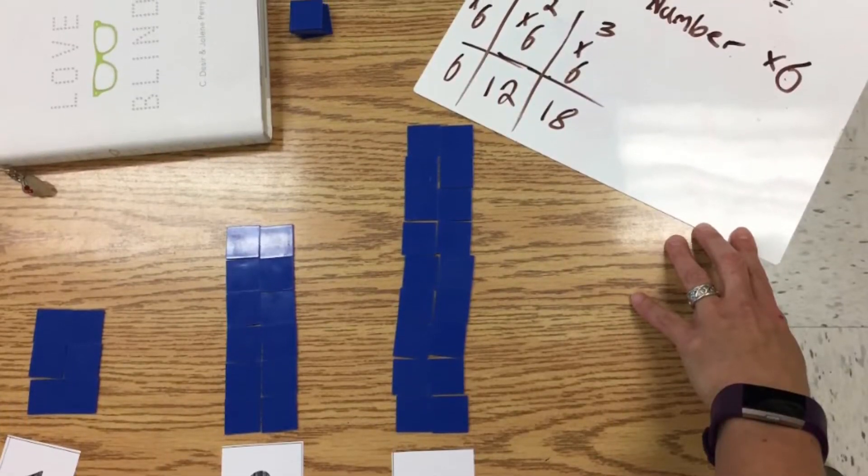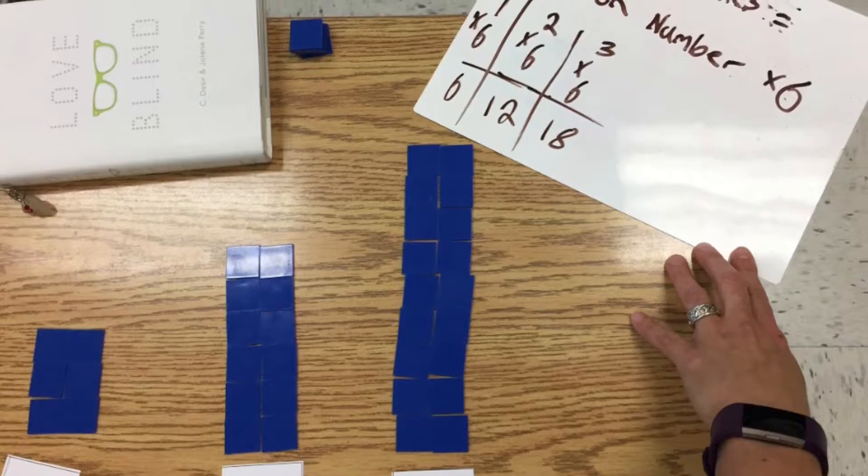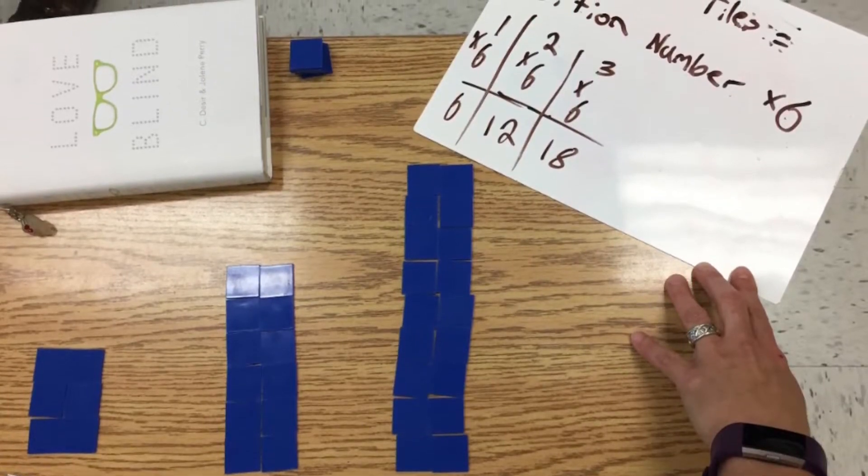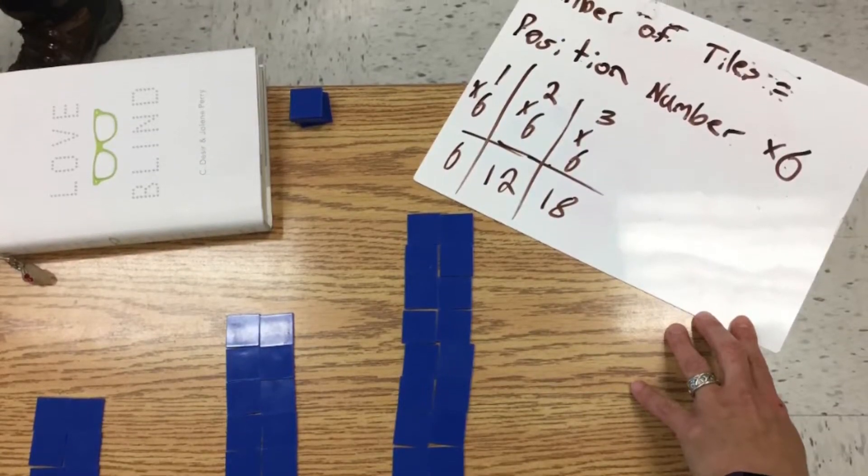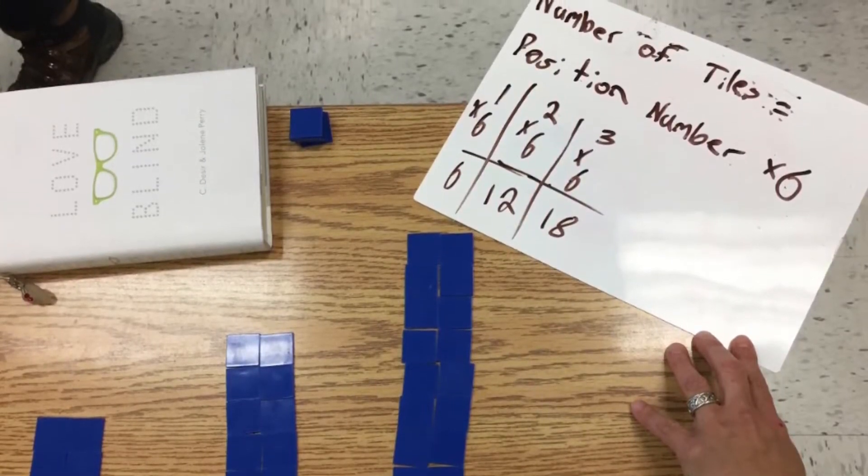Here is a student showing their thinking at each position number to figure out what the rule was. The student began by looking at each position number to see that the rule was the same and then summarized it in the sentence at the top of the whiteboard.